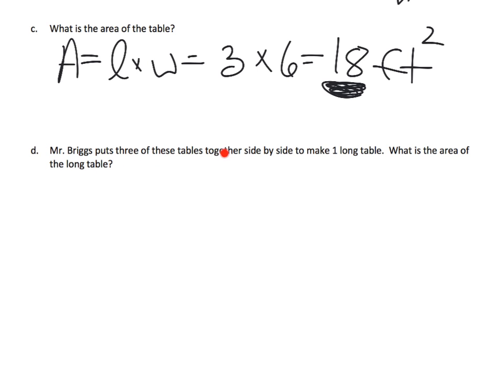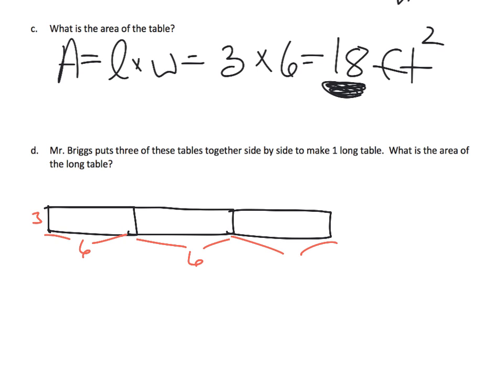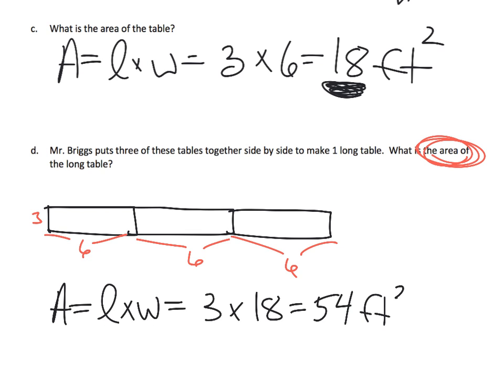Mr. Briggs puts three of these tables side by side to make one long table. So we've got three by six, another three by six, and another three by six. This is three, and this is six, this is six, this is six. And if we're finding the area of that rectangle, that means it's going to be length times width, which is three times 18, because this is 18. So the area is 54 square feet. There's 54 square tiles necessary to make this big old long table.